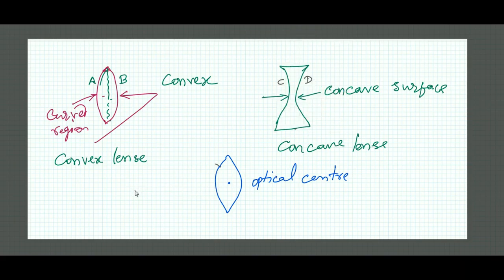If light passes through this point, then it passes without any deviation straightway.